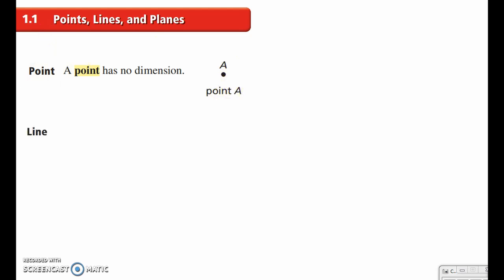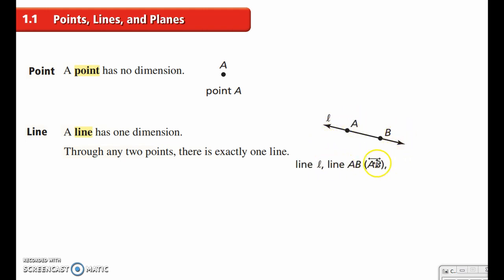Then a line. A line has one dimension. And through any two points, there's exactly one line. So this right here, we can name this, there's several ways we can name that. We could name it line L. It's a lower case L. Or we could name it AB. And we put a little arrow above it like this. Or we could also name it BA. It doesn't tell us which way it goes from left to right or right to left. So we could name it line AB or BA.